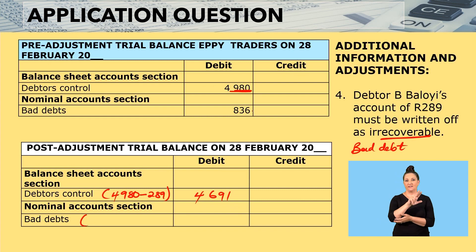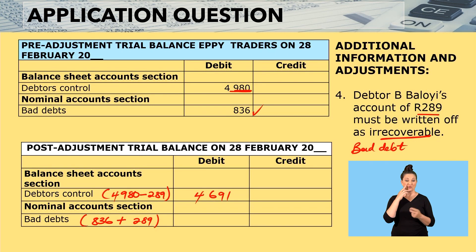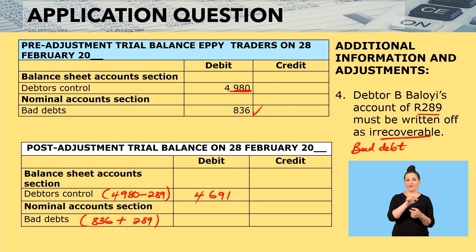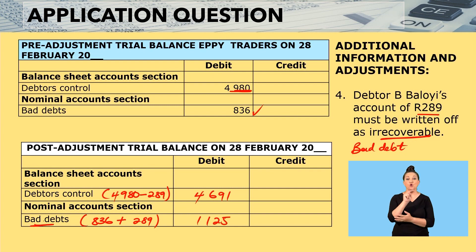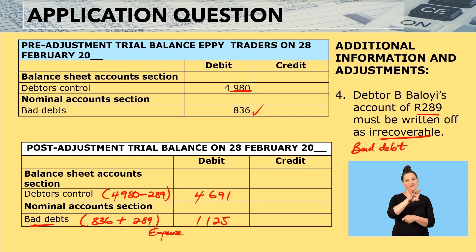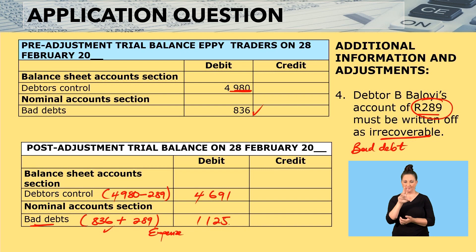In the nominal account section, our bad debts balance was 836. We add 289 for the write-off, so 836 plus 289 gives us 1,125. This is what you end up with in your bad debts in the nominal account section on the debit side, because bad debts are an expense. We had 836 in the pre-adjustment trial balance, then we adjust by 289, and therefore we end up with 1,125.